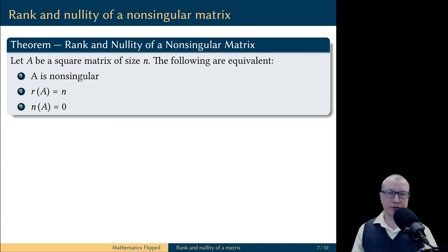Suppose we have a matrix A of size N by N — it is a square matrix. Then the following statements are equivalent. First, A is non-singular. Second, the rank of A is maximum possible, equal to N. And the third statement is that the nullity of A is equal to zero.